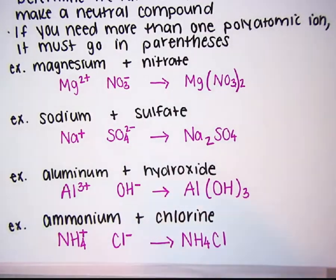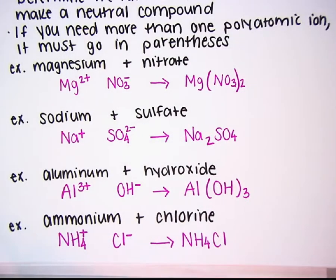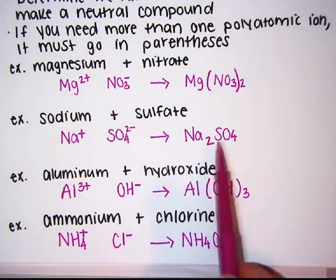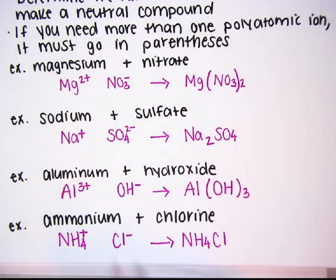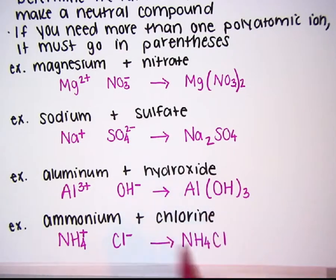Notice that all four of these compounds are ternary, meaning they contain 3 elements. Magnesium, nitrogen, oxygen — 3 elements. Sodium, sulfur, oxygen — 3 elements. Aluminum, oxygen, hydrogen — 3 elements. Nitrogen, hydrogen, chlorine — 3 elements.